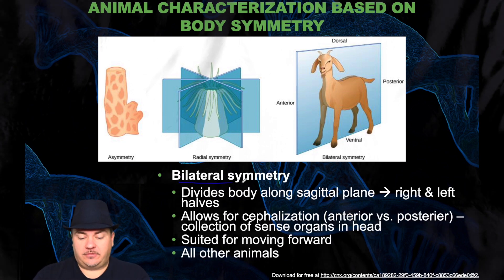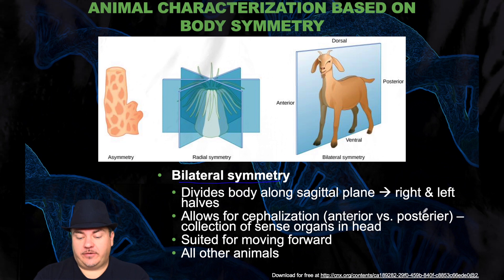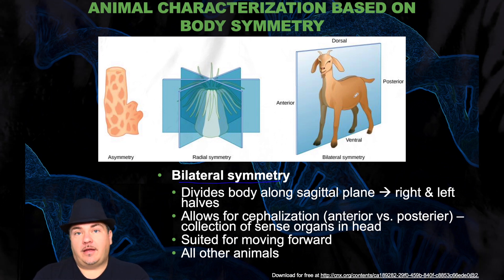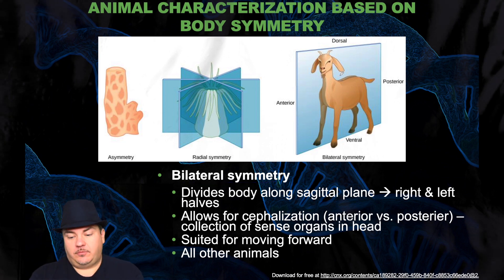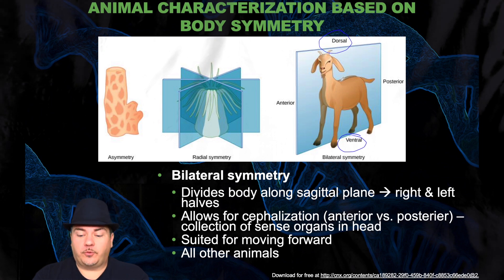Then we have bilateral symmetry. This divides the body along the sagittal plane so that you have right and left halves. This allows for cephalization, which is the formation of the head, so you have an anterior versus posterior, and the collection of sense organs in that head. It's suited for moving forward, and this is all other animals. For example, we are bilateral — we have an anterior and a posterior. We also have a dorsal and a ventral. The dorsal fin is on the top of the organism.